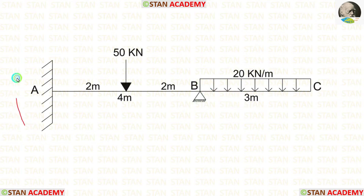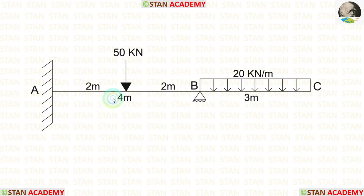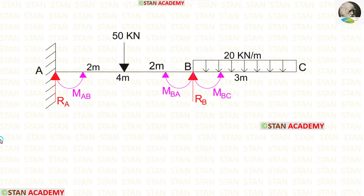At point A, there is a fixed support. At point B, there is a hinged support. Span AB is 4 meters long and the overhanging span BC is 3 meters long.